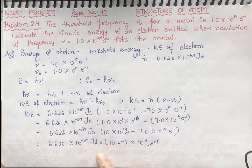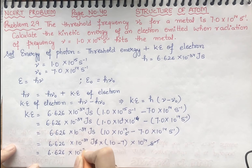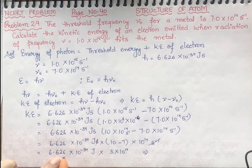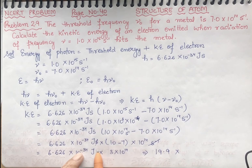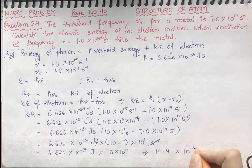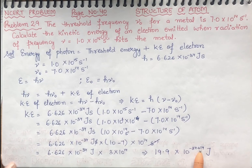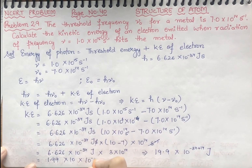So we get 6.626 × 10⁻³⁴ J × 3 × 10¹⁴. Now multiply 6.626 by 3 to get 19.9. Combining the powers: 10⁻³⁴ × 10¹⁴ = 10⁻³⁴⁺¹⁴ = 10⁻²⁰. So we have 19.9 × 10⁻²⁰ J. Writing in standard form: 1.99 × 10 × 10⁻²⁰ J, and multiplying gives 1.99 × 10⁻¹⁹ J.